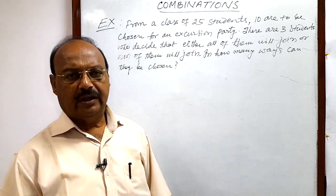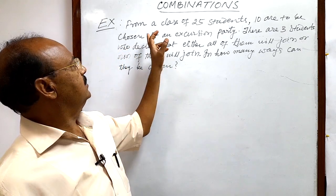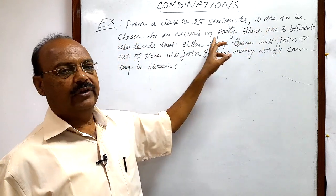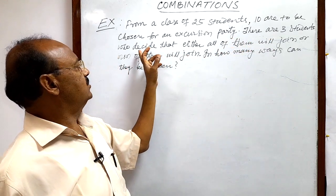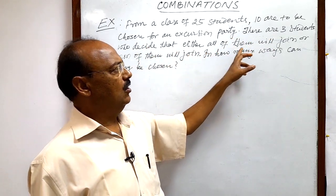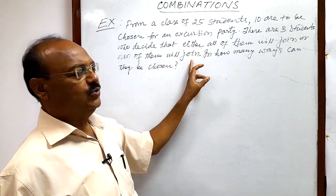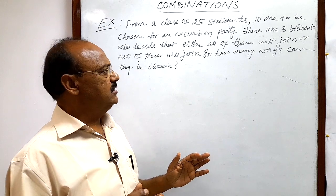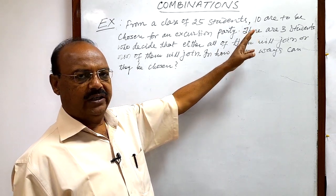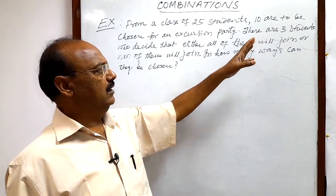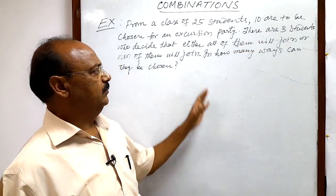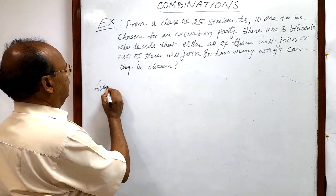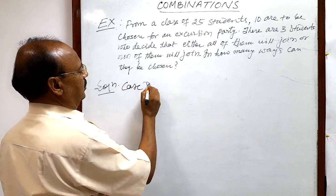Here we will see a question from the topic combinations. From a class of 25 students, 10 are to be chosen for an excursion party. There are three students who decide that either all of them will join or none of them will join. We can solve this question in two cases: first case is when the group of three students join the party, and second case when the group of three students do not join the party.